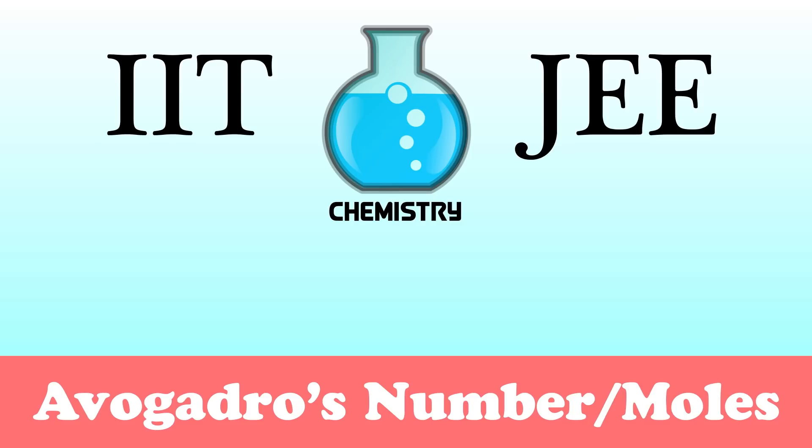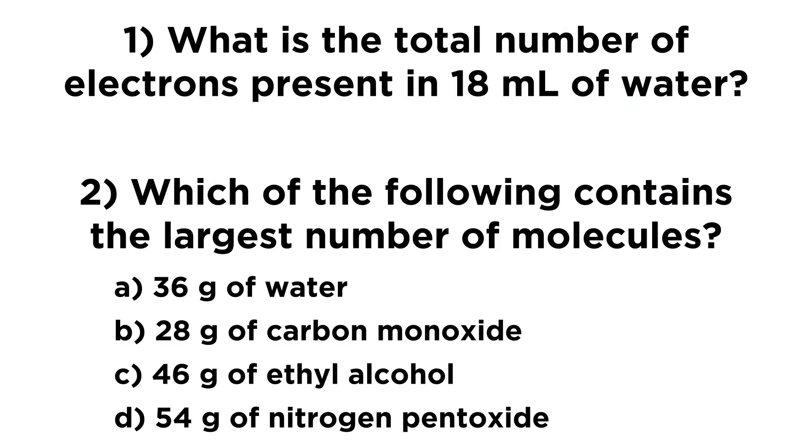So for this first problem, we're going to be looking at some questions associated with Avogadro's number and the mole. So the first question says, what is the total number of electrons present in 18 milliliters of water? And the second question says, which of the following contains the largest number of molecules? And we have some options here of some different masses of different compounds. So if any of this sounds confusing, go ahead and check out my tutorials on the mole and Avogadro's number and related topics. And when you're ready, give this a try.